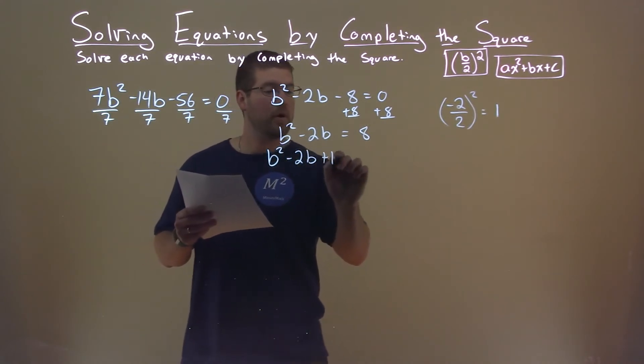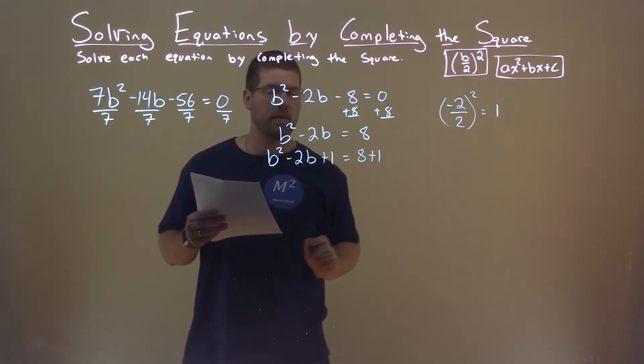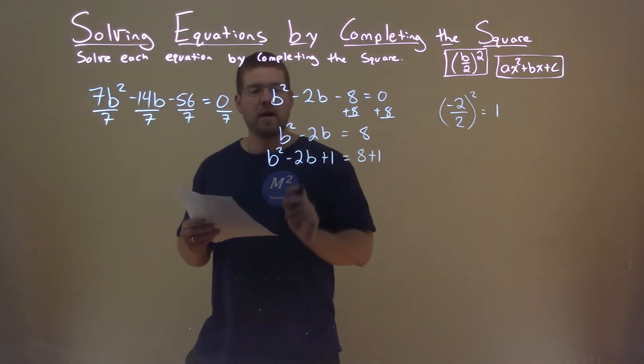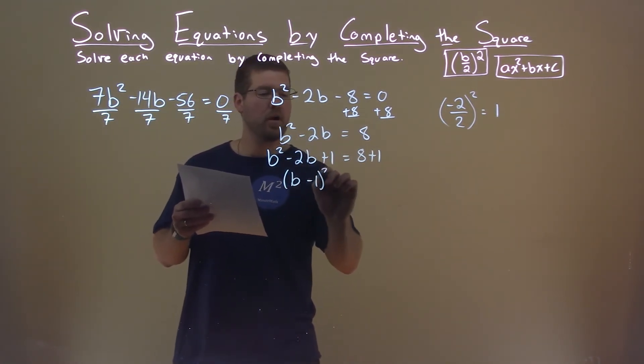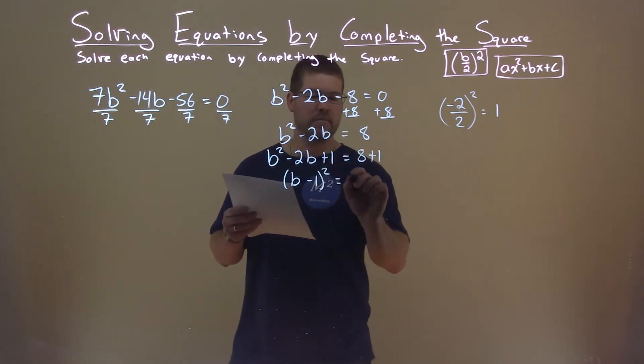So now we're going to add a 1 to both sides of our equation. b squared minus 2b plus 1 equals 8 plus 1. Our left-hand side is a perfect square. We have b minus 1 all squared is equal to 8 plus 1, which is 9.